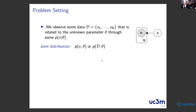Let's start with the problem setting and basic definitions. The simplest setting is when you observe capital N data points X, which can be composed of several types of data. You can treat X as a realization of a random variable. This data is related to some unknown parameter theta through a likelihood or probability distribution P(X|theta). The first thing to specify your model is the joint distribution P(X, theta), or considering all the data, P(D, theta).